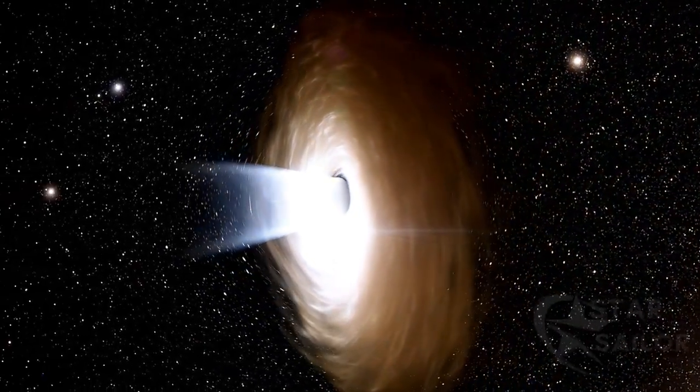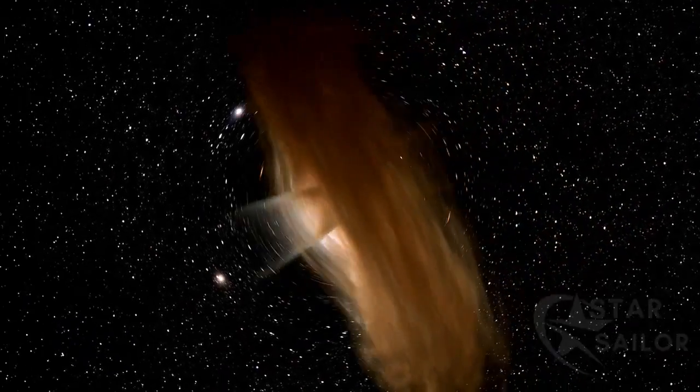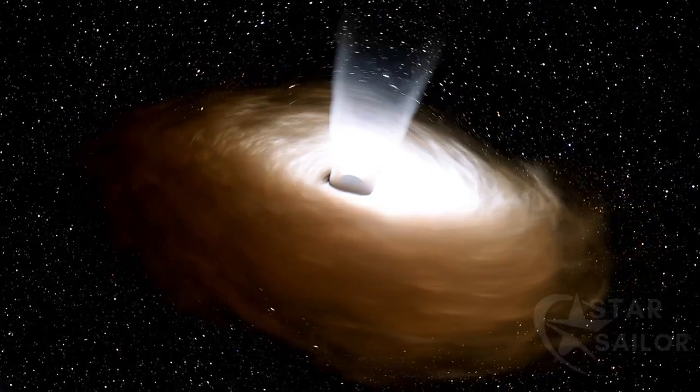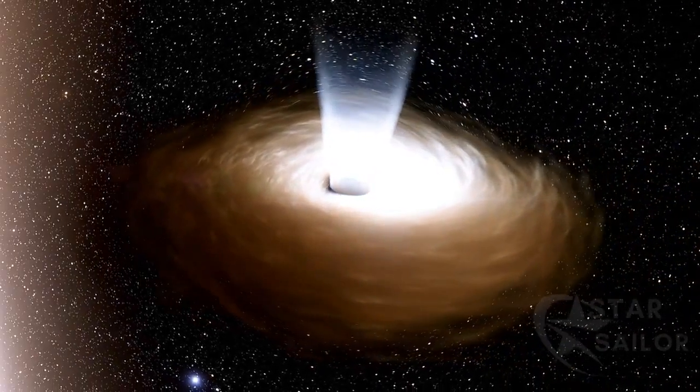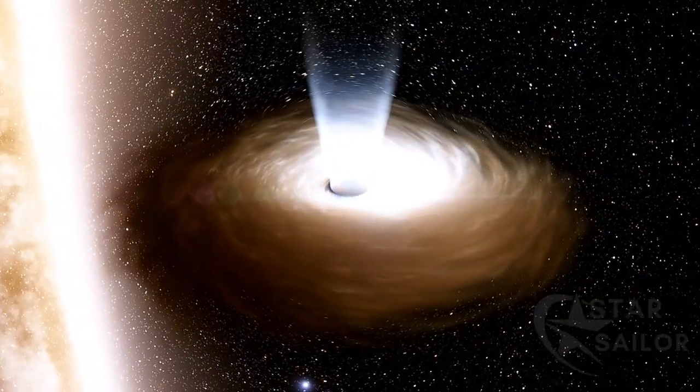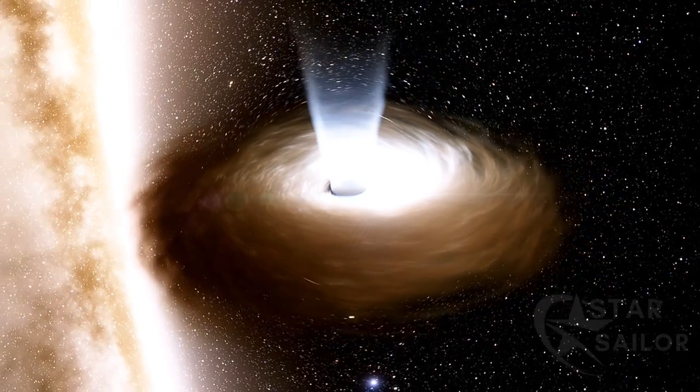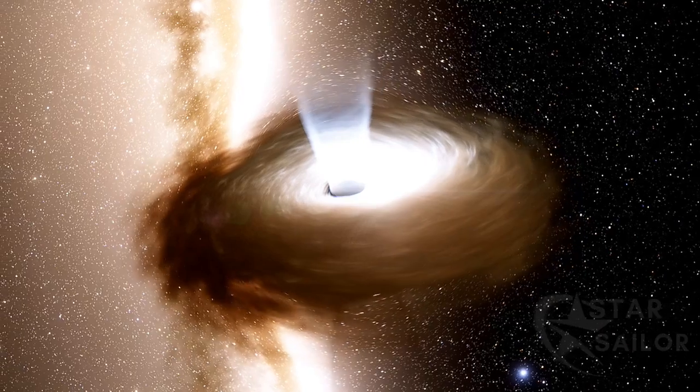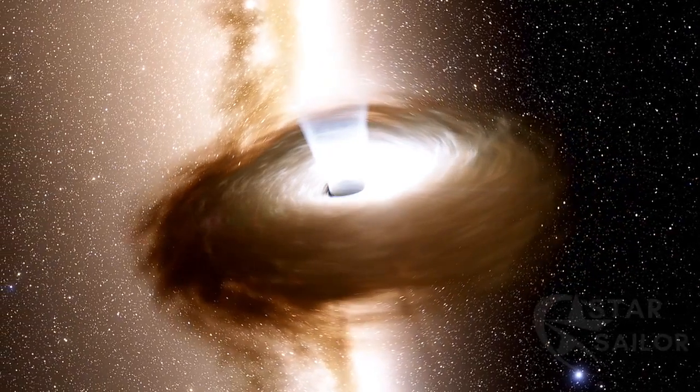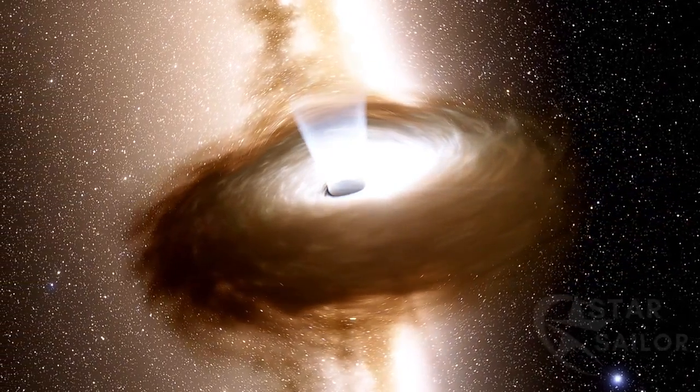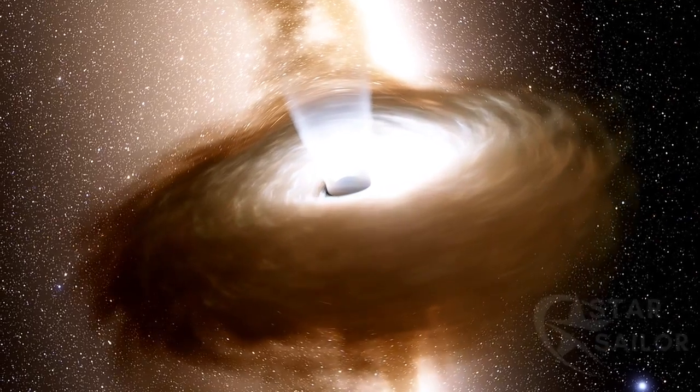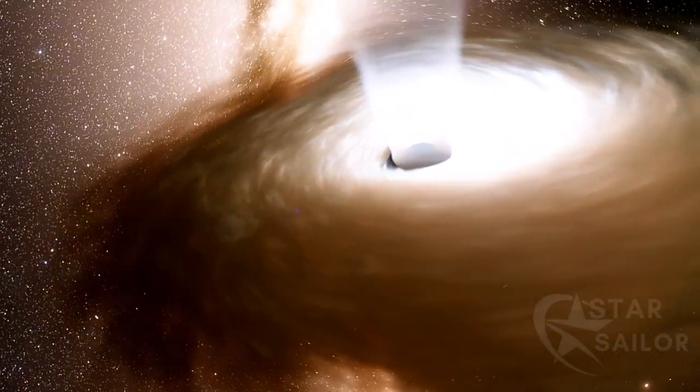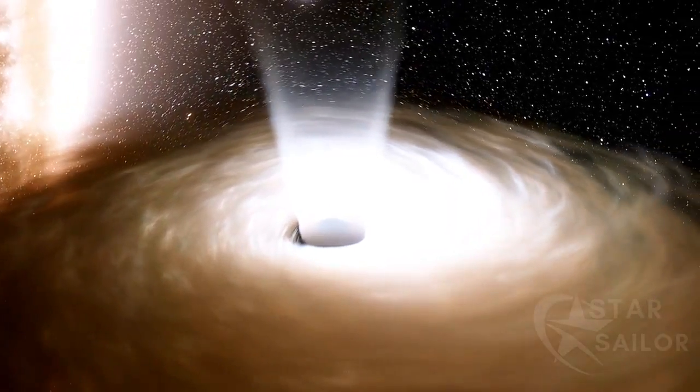Surrounding the black hole is a vast accretion disk of gas and dust, extending over hundreds of light-years. This disk is incredibly hot, with temperatures reaching millions of degrees, and it emits powerful radiation across the electromagnetic spectrum, from radio waves to X-rays. The quasar produces an astonishing amount of energy, about a quadrillion times more than the Sun. This immense energy output is due to the rapid accretion of material into the black hole, which can sometimes be seen as jets of particles being ejected at nearly the speed of light.